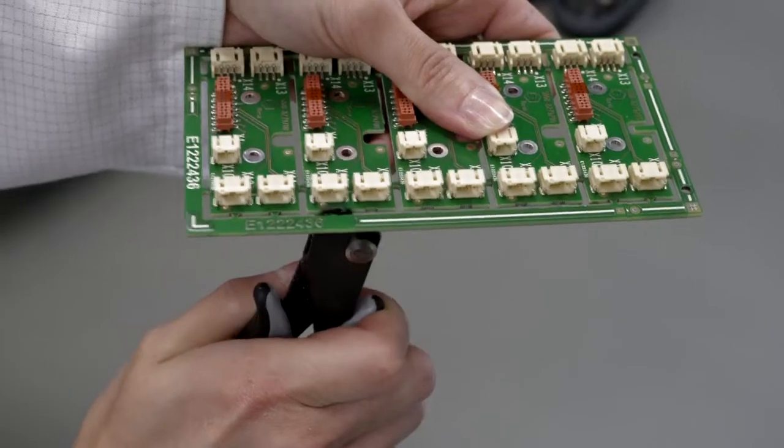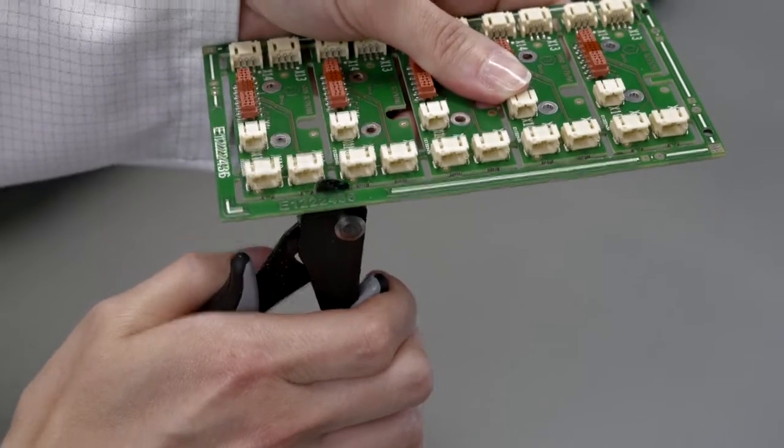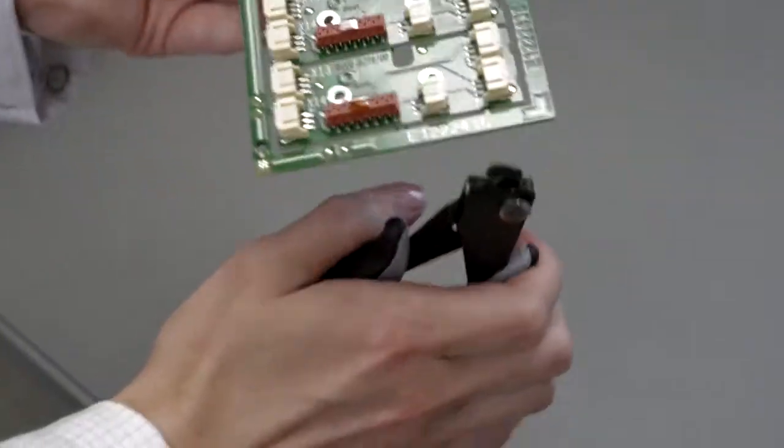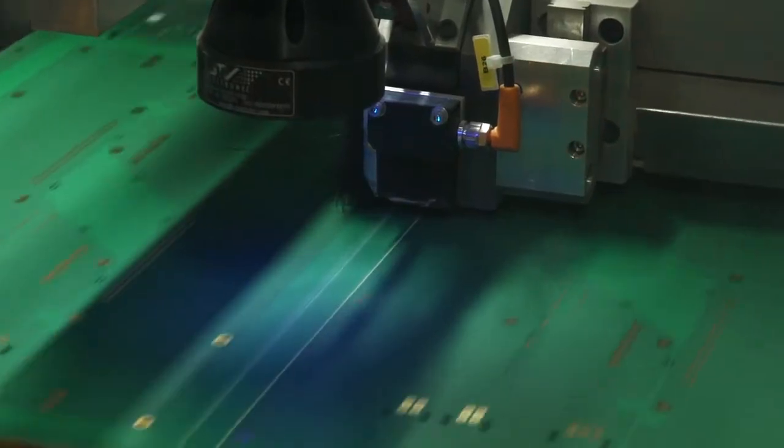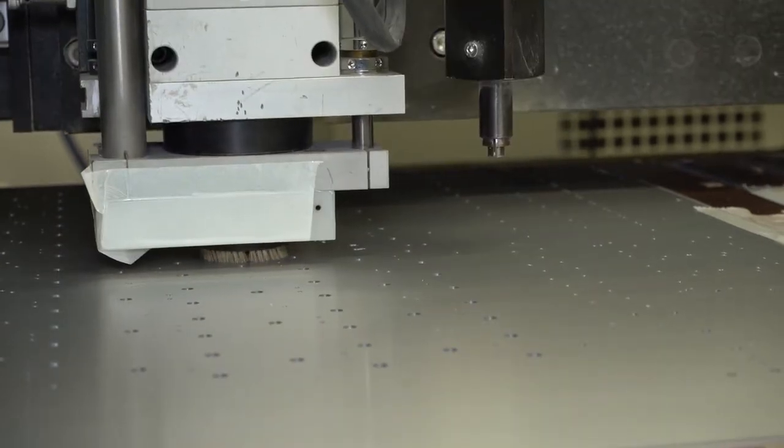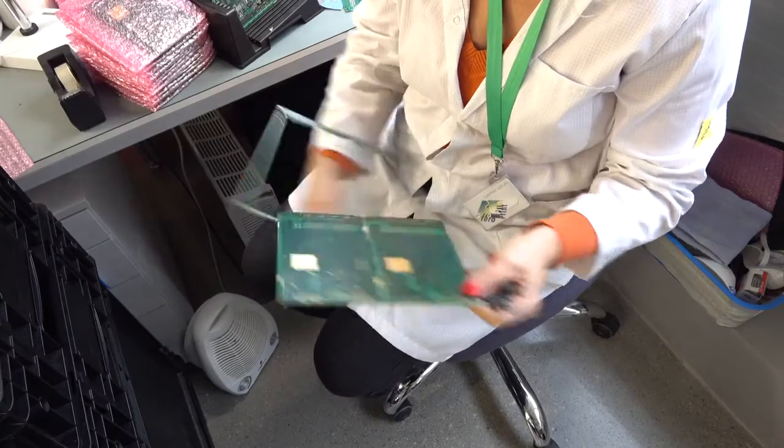Next we break out the individual boards from the panel and remove the panel borders. At the end of the production of the bare boards we prepare for this step by v-cut or brake routing of the panels so that after assembling the individual boards can be separated easily.